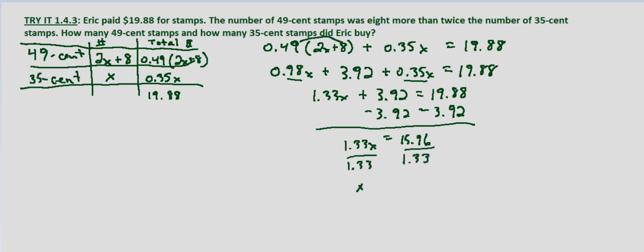And that's the number of 35-cent stamps. To determine the number of 49-cent stamps, we simply plug back into our original setup, which is 2 times the number of 35-cent stamps, which is 12, plus 8, which equals 24 plus 8, which equals 32 49-cent stamps.